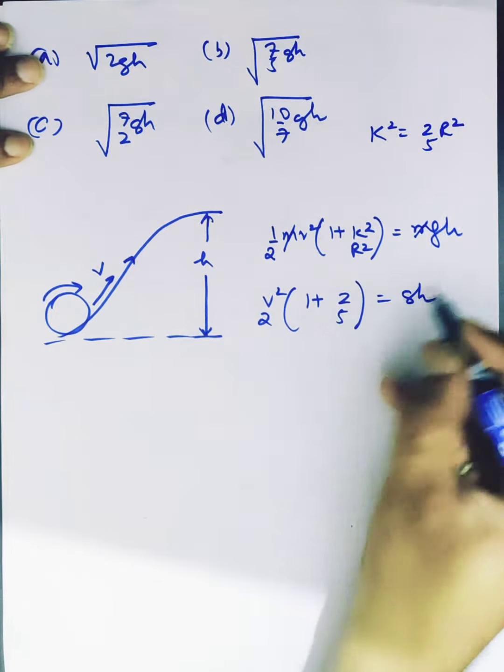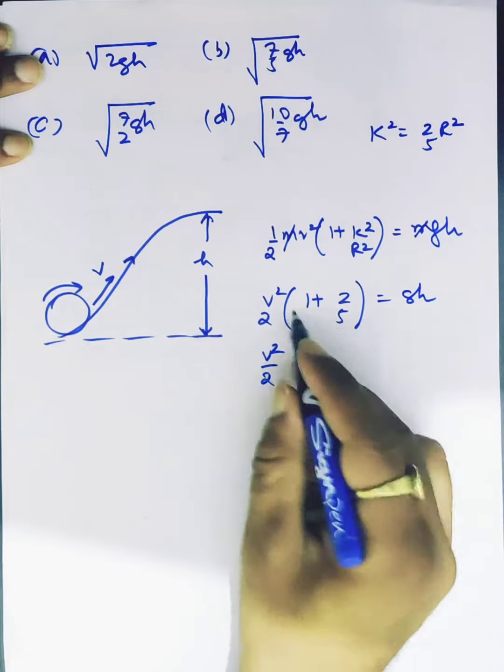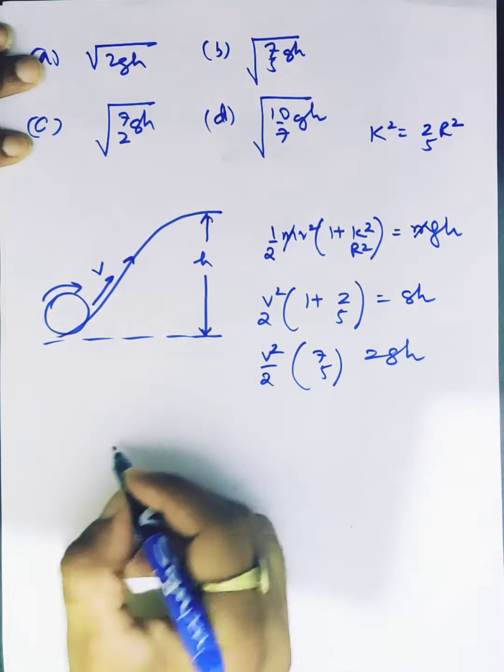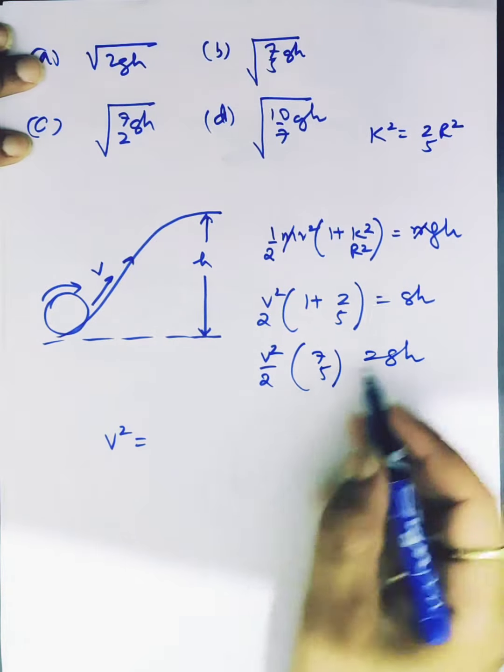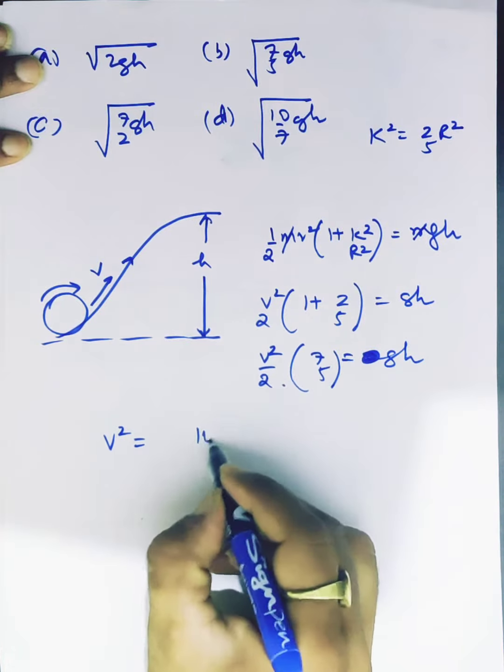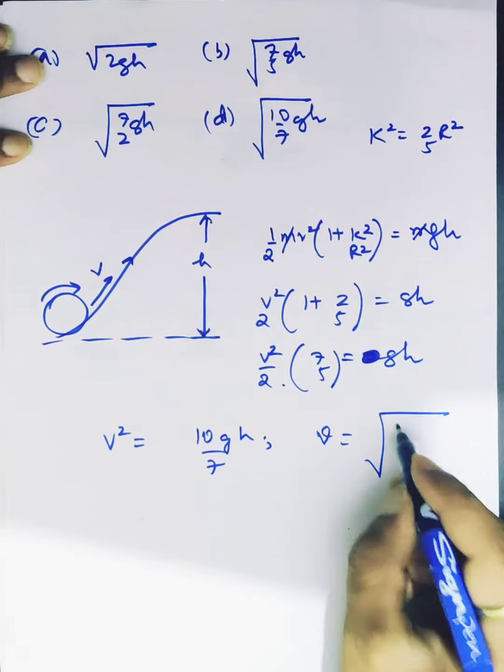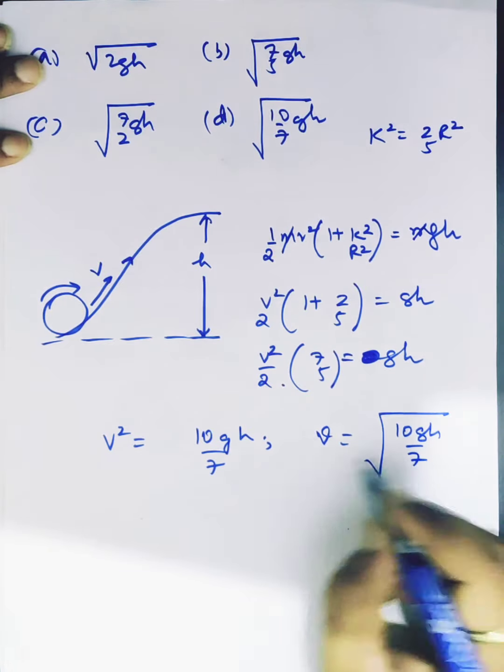This equals gh. 5 and 2 is 7, so 7v²/10 equals gh. Therefore, v² equals 10gh/7. And finally, velocity is square root of 10gh by 7.